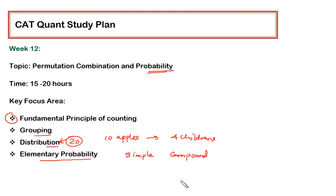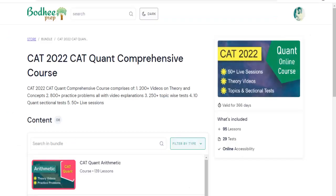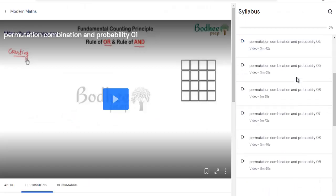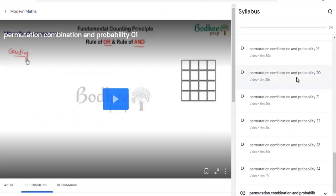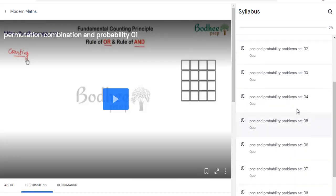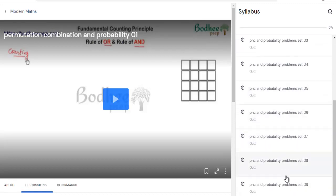Now from the course, let me show you where we will be finding it. Once you log in into the course, you have to go to the modern maths. Here you can see that I have provided all the theories from permutation combination specific to the four topics which I have discussed, and then you can go to the practice problems. All these practice problems definitely you will find challenging, but yes, after going through the solution and understanding how the concept is used.